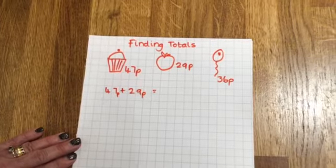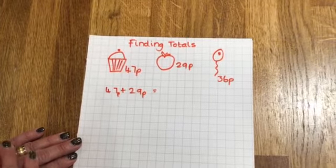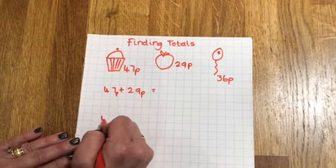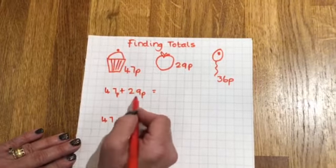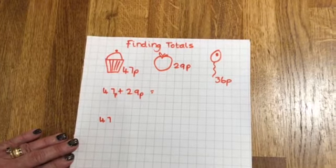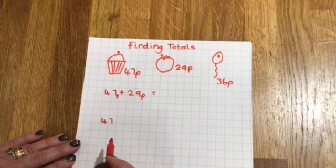First way I could do it is on a number line. Remember my number line starts with the biggest number which in this case is 47 so I'm going to write my 47 and then I'm going to jump on by 29. Now it'd be quite hard to jump on by 29 in one go so I'm going to jump in more than one jump.